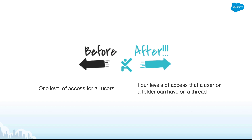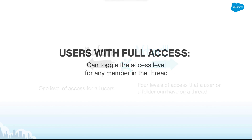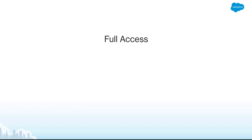Granular sharing creates four new levels of access that a user or a folder can have on a specific thread. Users with full access of a thread can toggle the access level for any participants on that thread. The four access levels, in order of greatest access to least, are: Full access, Can edit, Can comment, and Can view.